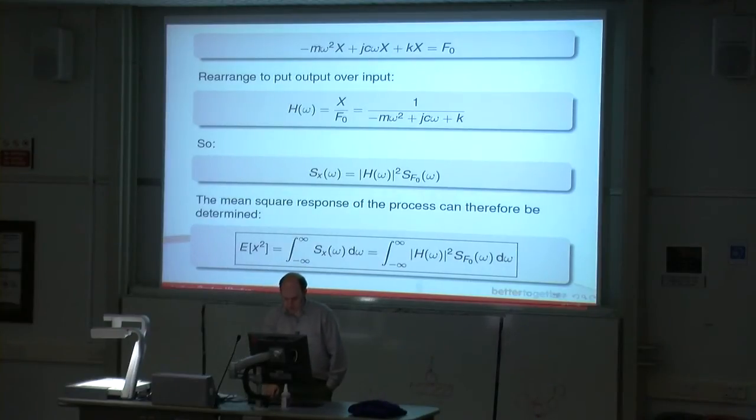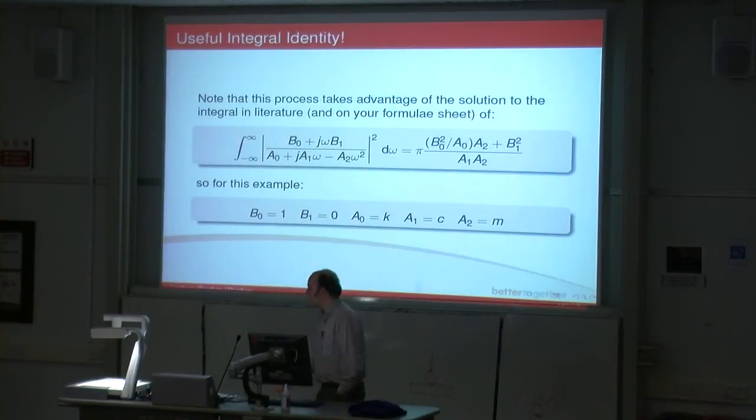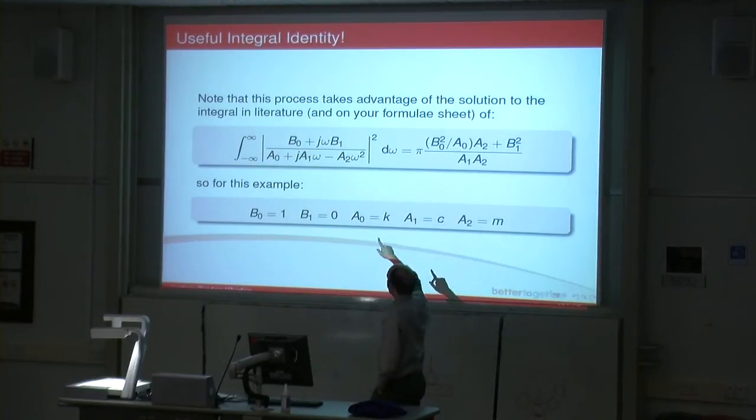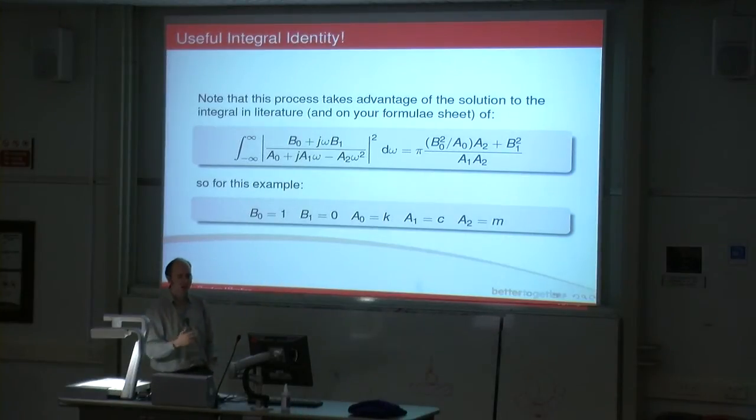Often what happens is that H omega is a complicated formula, but it will have this form. This is a useful integral identity that is given to you on your equation sheet, so you don't need to worry about having to remember it. Essentially your H omega is going to be in this form with certain values for B0, B1, A0, A1, and A2. If you know that form, if your H omega fits that form, you know that the solution to this part of the equation is this: π times this function here.